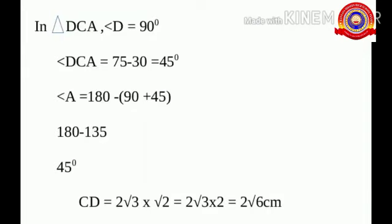In triangle DCA, angle D is equal to 90 degrees. Hence, angle DCA is equal to 75 minus 30 degrees, which is 45 degrees. Therefore, angle A is equal to 180 minus (90 plus 45), which gives 180 minus 135, equal to 45 degrees.